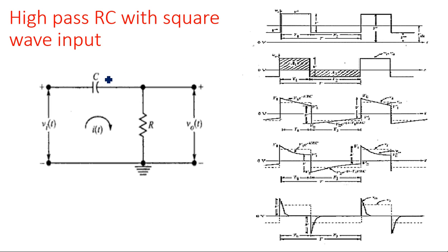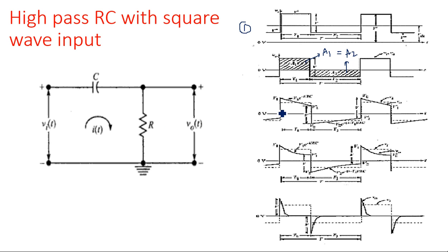When a high-pass RC circuit receives this waveform, the key observation is that the area occupied by the positive peak of the waveform is equal to the area of the negative peak. Initially there is a sudden change in the input voltage, so the same change appears at the output, and then the capacitor slowly charges depending on the time constant RC relative to the input signal period.